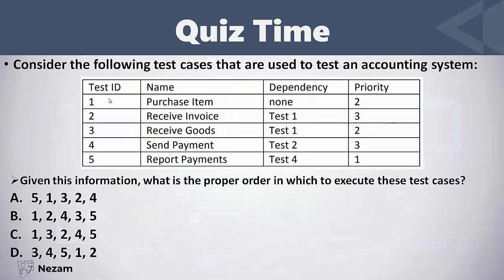Consider the following test cases used to test an accounting system — five test cases, each with a dependency and priority. The ideal case is executing test cases based on priority, but if a high priority test case depends on a low priority test case, we must execute the low priority one first. Let's search for the test case with no dependency. Test case number one has a dependency of none, so we begin with test case number one.